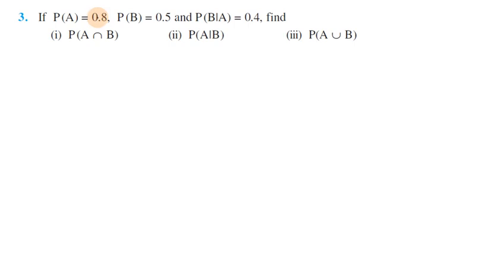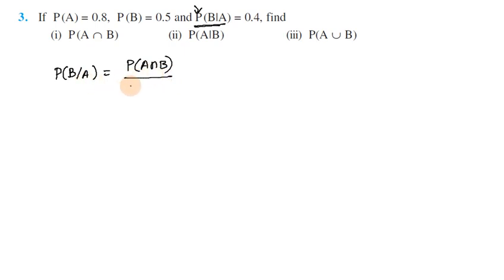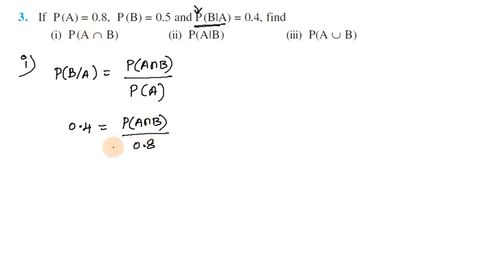Question 3: If P(A) = 0.8, P(B) = 0.5, and P(B|A) = 0.4. We need to find P(A∩B). Using the formula P(B|A) = P(A∩B) / P(A), so P(A∩B) = P(B|A) × P(A) = 0.4 × 0.8 = 0.32.